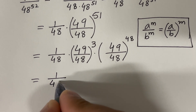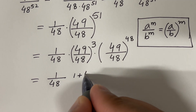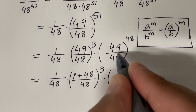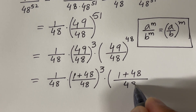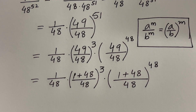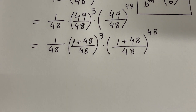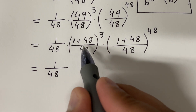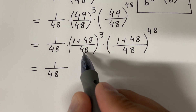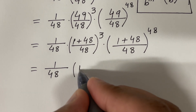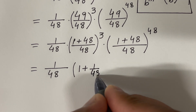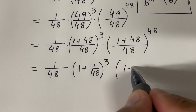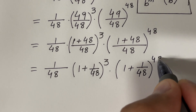Now let me rewrite: 1 over 48, and 49 over 48 becomes 1 plus 48 over 48. Dividing both terms by 48, that is 1 over 48 plus 1, which is 1 plus 1 over 48. So we have 1 over 48 times (1 + 1/48) raised to the power 3, times (1 + 1/48) raised to the power 48.